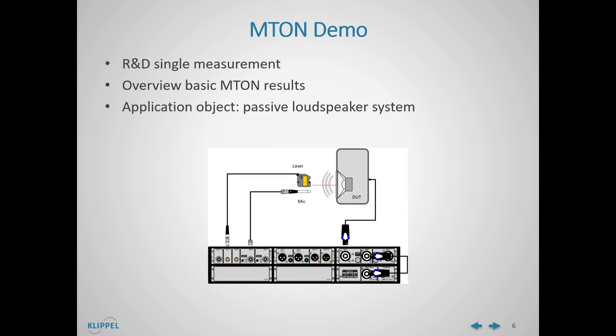In this case, we will use the default configuration, which consists of the laser card, XLR card, and speaker card, and in addition, we will use the amplifier card. The amplifier card will fit the signal to the DUT throughout the speaker card. At the same time, microphone and laser signals will be captured by the laser card. It's important to note that this hardware setup is specially prepared for this application object, a passive loudspeaker system. However, the Clipper system is compatible with other setups, such as self-powered or wireless systems.